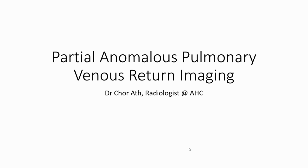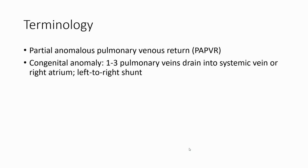Hello, everyone. Today I am going to talk about Partial Anomalous Pulmonary Venous Return (PAPVR). We can call PAPVR in case of one to three pulmonary veins draining into systemic vein or right atrium, a left to right shunt.